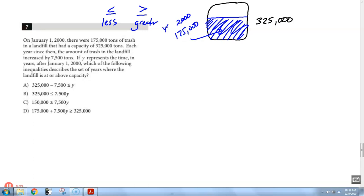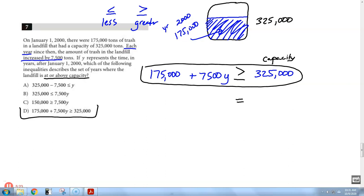Each year since then, so each year, this is talking about slope. Every single year, you are increasing by 7,500. So I'm increasing by 7,500 times every year. I started at 175,000. And my capacity is at 325,000. Now, if I put an equal sign in here, if I put an equal sign there, that would tell me exactly how many years before it fills up. But we want to know when it is at or above, or it is greater than or equal to capacity. All right. So, something that looks like this is what we're looking for. And it looks like we have it right here at D.